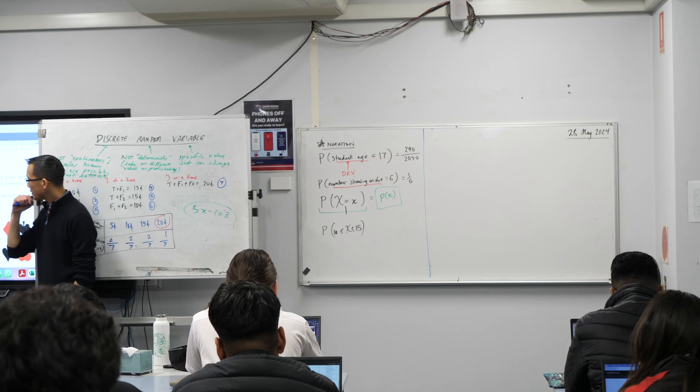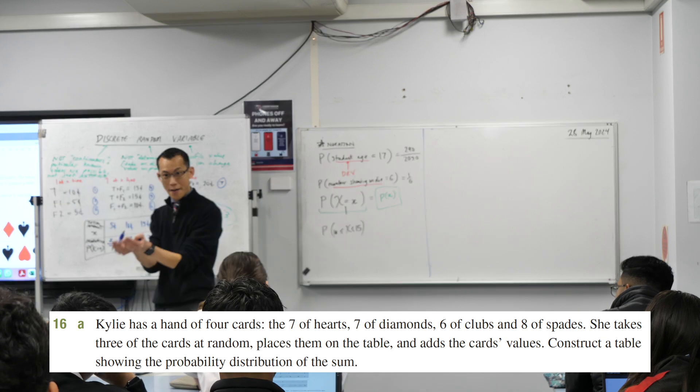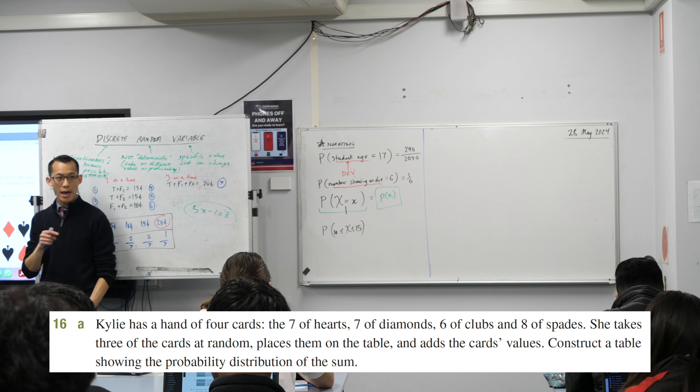Let's have a look at the situation. Kylie has a hand of four cards, so that's what she's got available to her: seven of hearts, seven of diamonds, six of clubs, eight of spades.